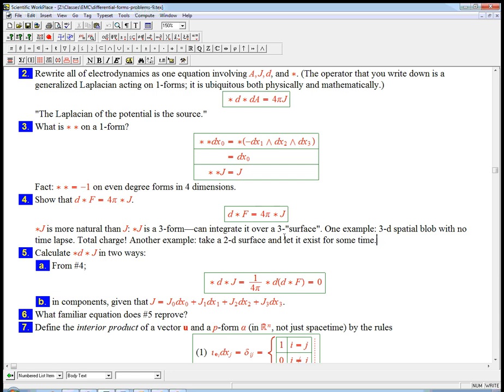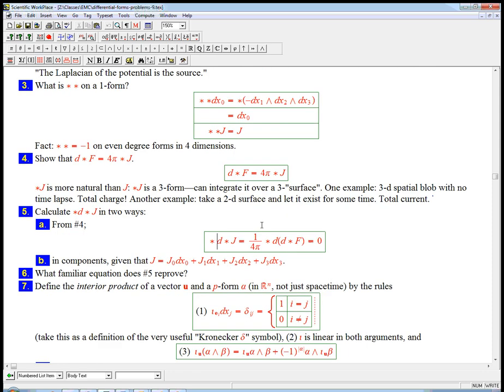One example is to just take a 3D blob, a 3D spatial blob, with no time lapse. I'm just going to have it flash into and out of existence. Then the integral of the three-form over that spatial blob turns out to be just integrating the charge density over that blob, which gives you total charge. Another example is take a 2D surface and let it exist for some time. So we've got two dimensions in space and one dimension in time. You'd have a little net or a mesh, and you'd watch stuff flow through it for some time. Turns out that the integral of star J over that three-dimensional surface is just the total current.